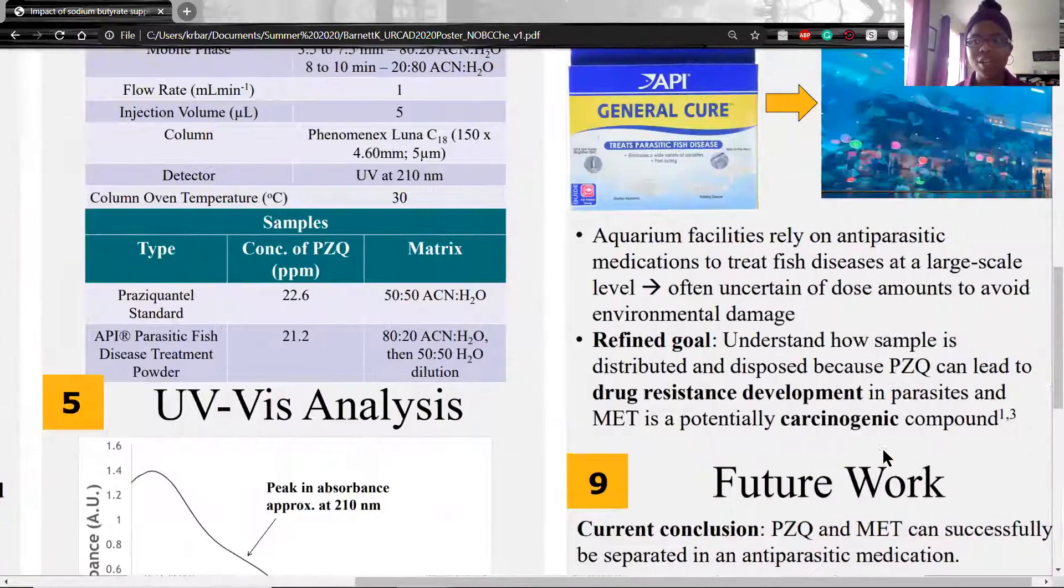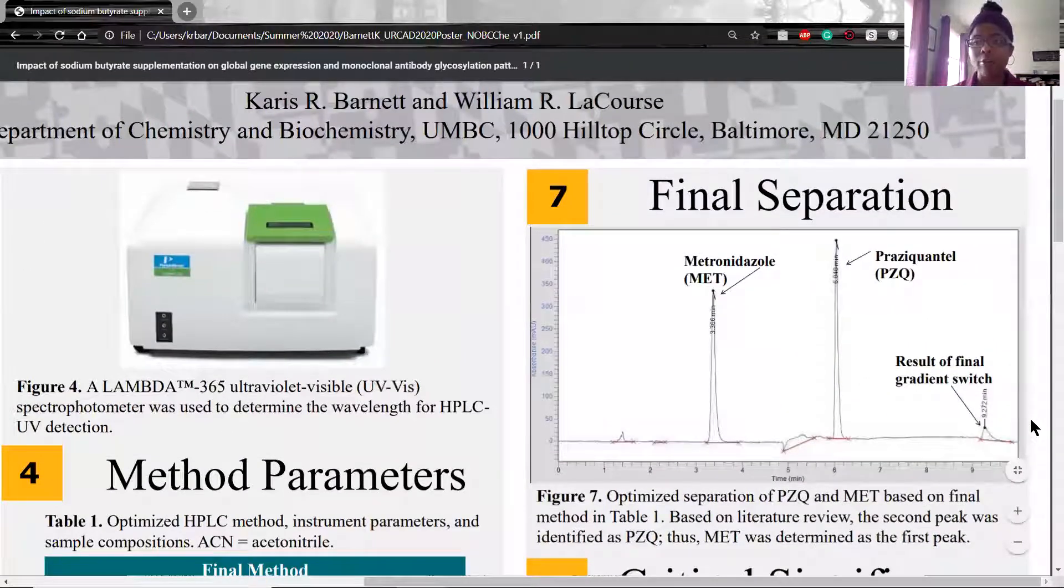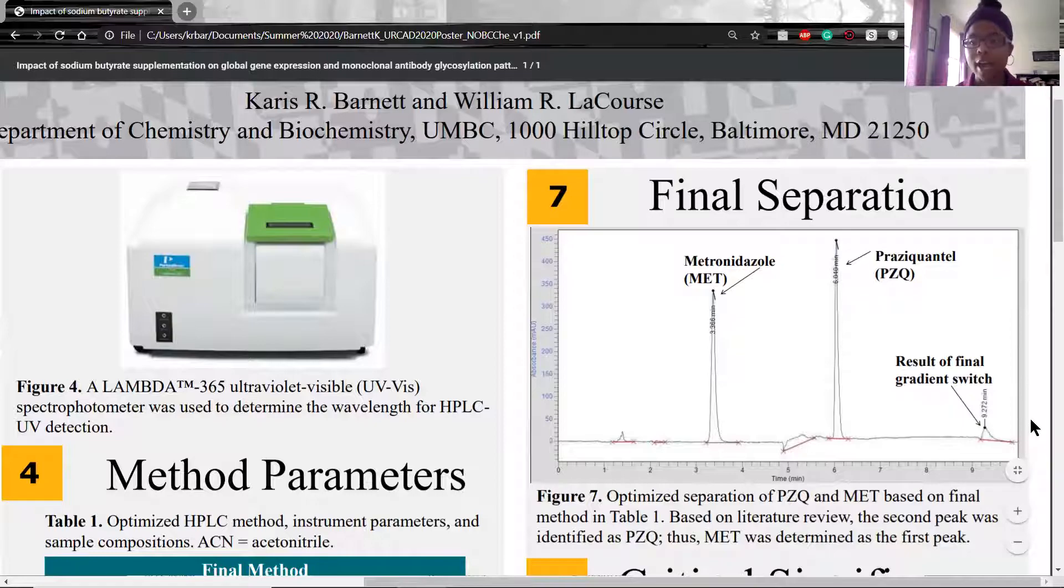However, we get to section 7, and we see that this definitely changes. This was a separation done after seven consecutive experiment trials that changed the mobile phase and column type. In this case, the compounds are quantifiable because they're a Gaussian shape, and we can indeed see that MET did elute first as predicted.